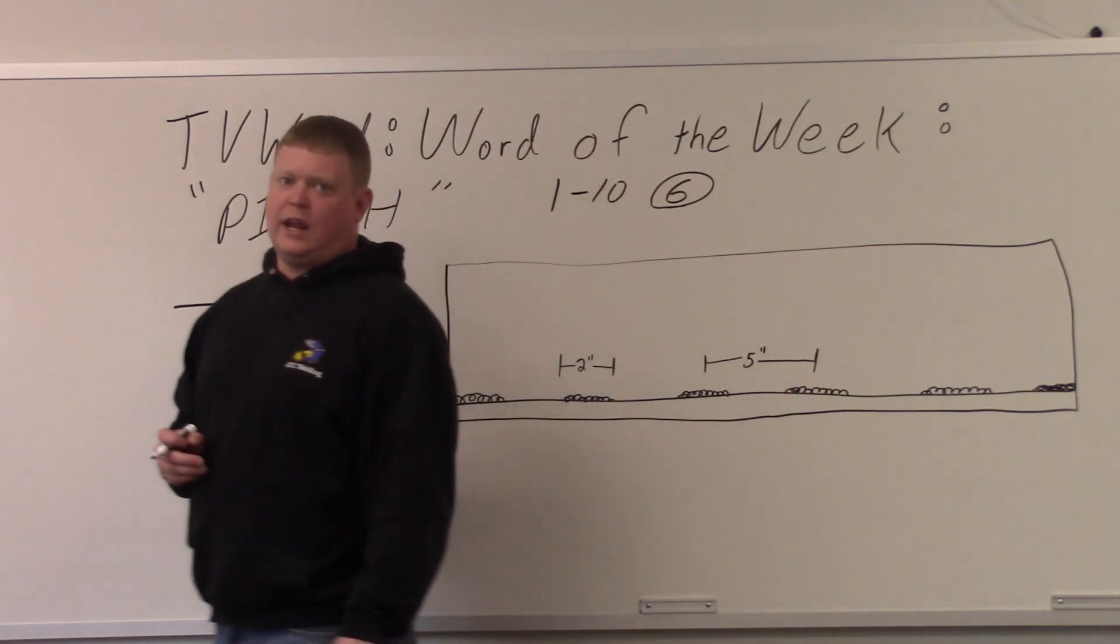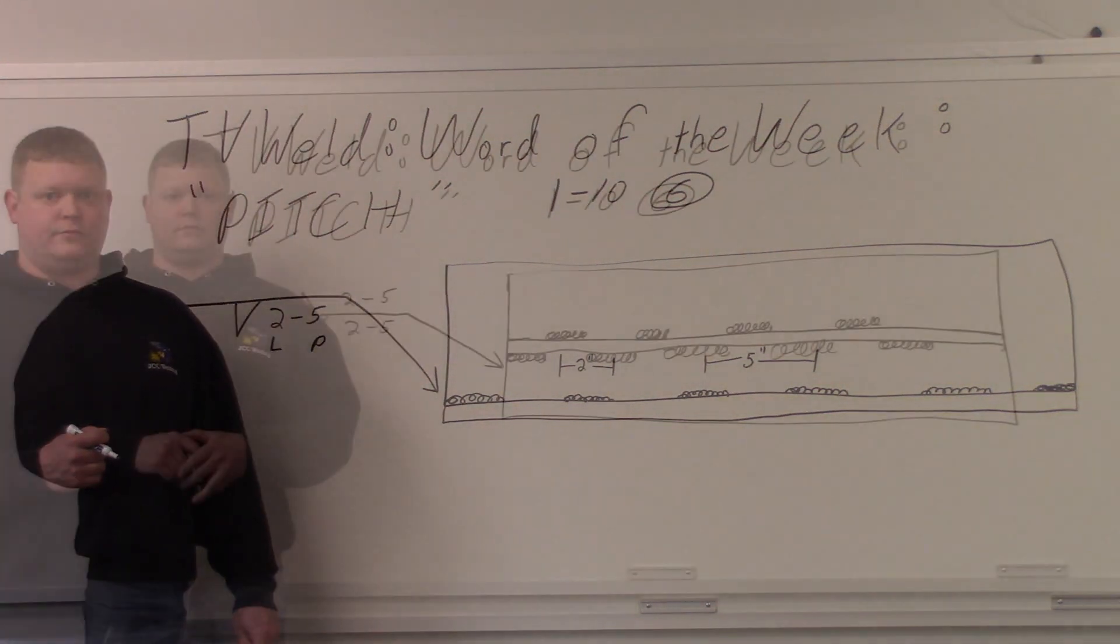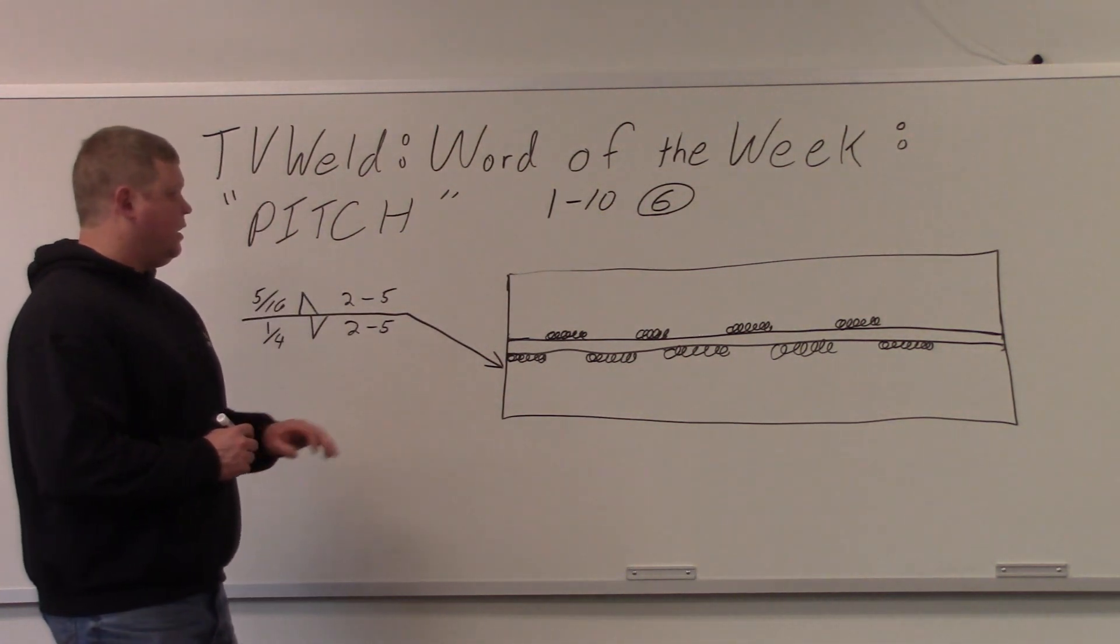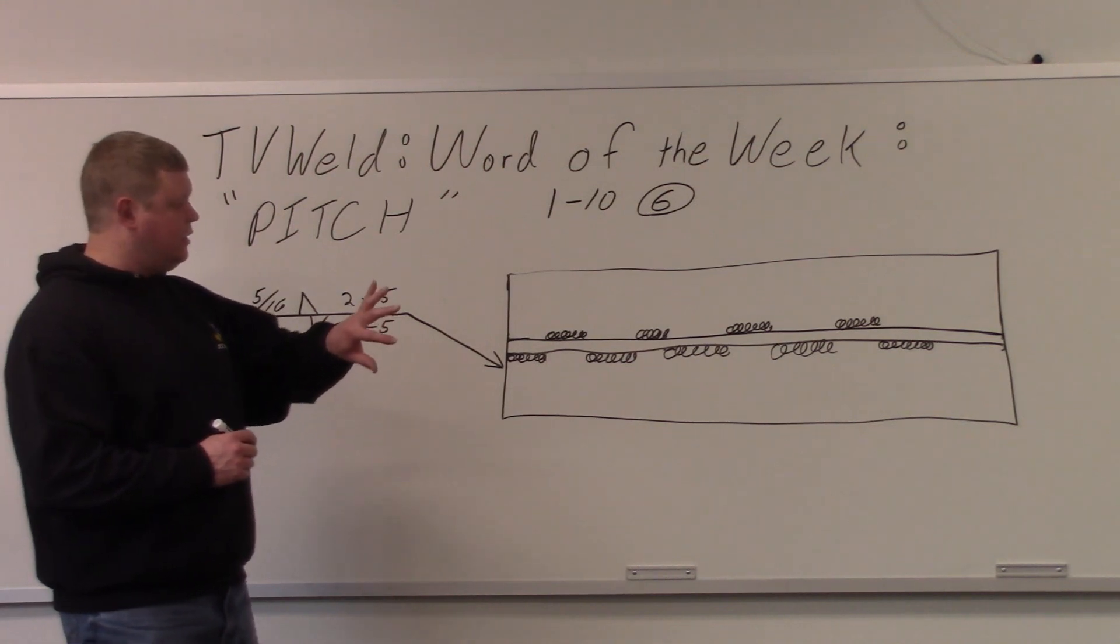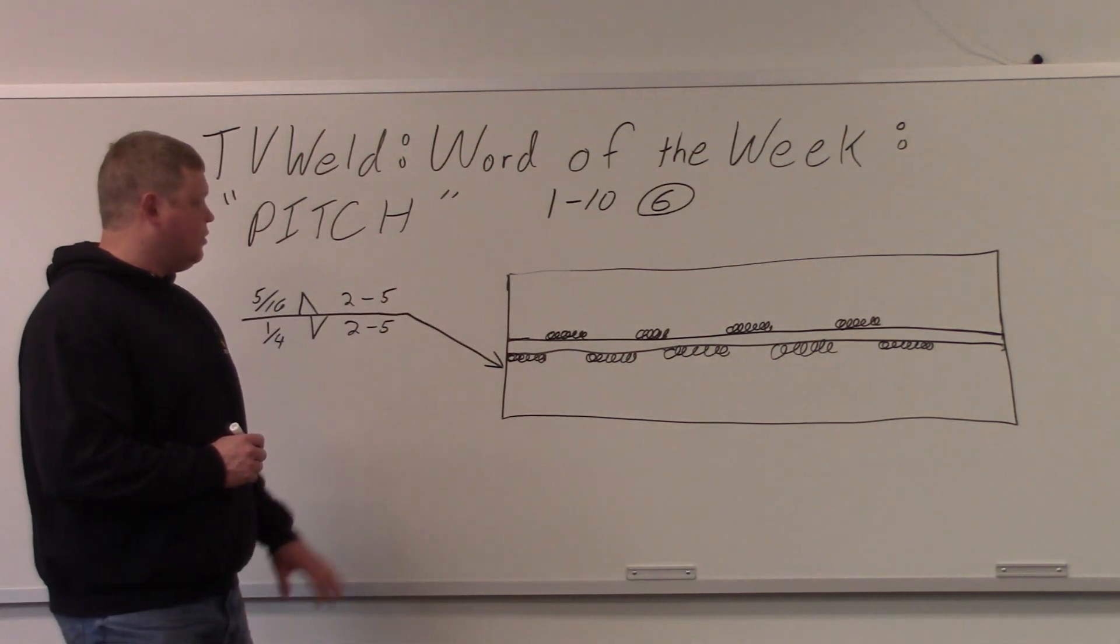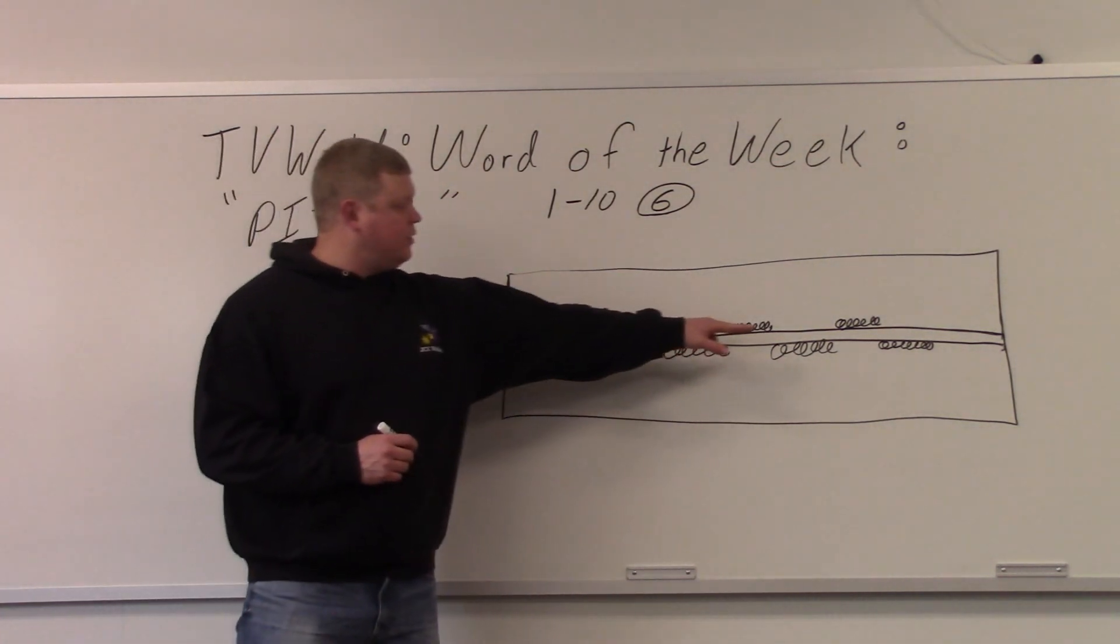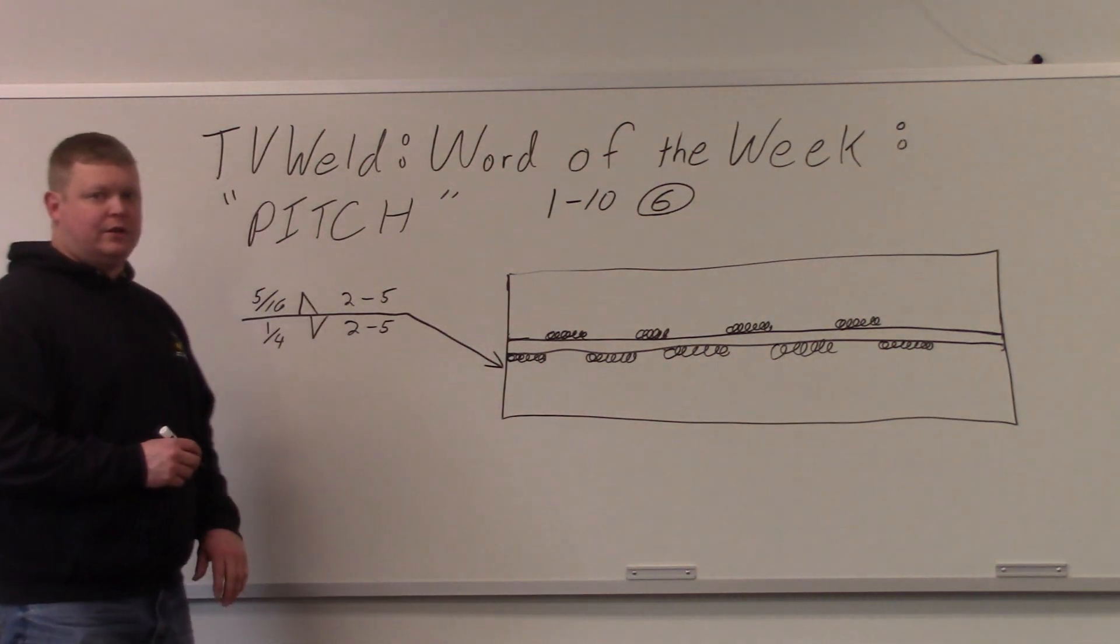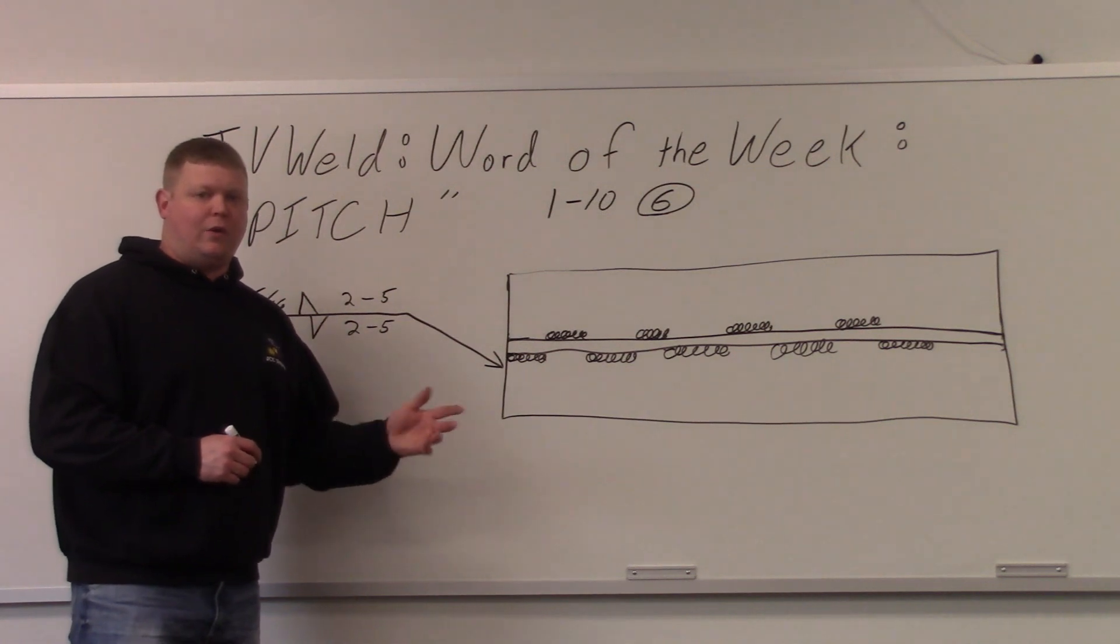So what we're going to do now is look at a staggered intermittent weld. This is a staggered intermittent weld. And we're looking at, again, a fillet weld on a T joint, but we're looking top down. So you're looking from the top down at the weld. This is the plate that's going vertical in the middle, and this is your flat plate on the bottom there. And then let's go over here to the welding symbol real quick. Just how would you draw a staggered intermittent weld on a welding symbol?